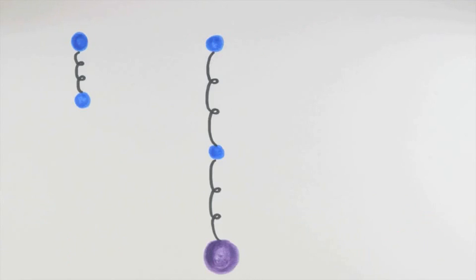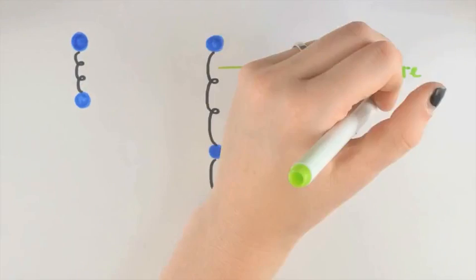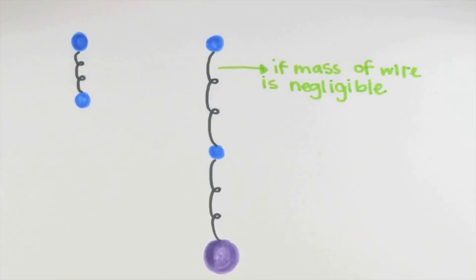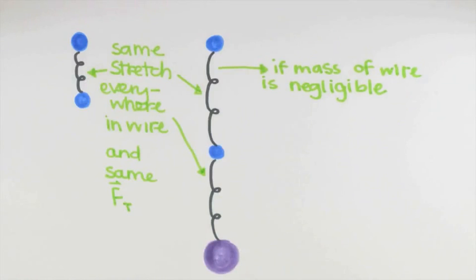This picture also illustrates another thing about the magnitude of the tension force. As long as the mass of the wire is negligible, say, compared to the mass of our system, then we would typically have the same amount of stretch everywhere in the wire, which would mean the magnitude of the tension force is the same everywhere along the wire.